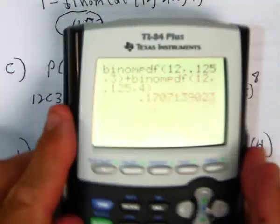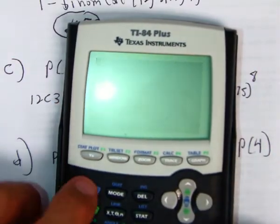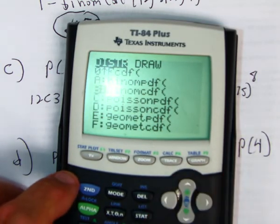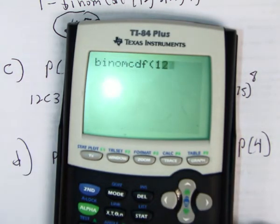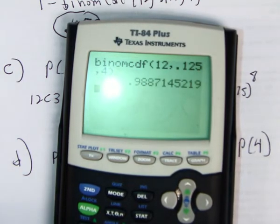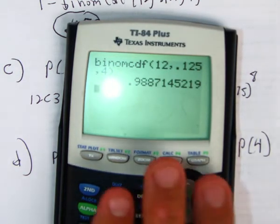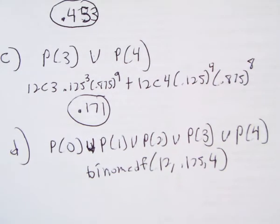And we're going to knock that out. So let's see what that looks like. CDF. That's 12, comma, 0.125, comma, four. And that comes out to 0.989.